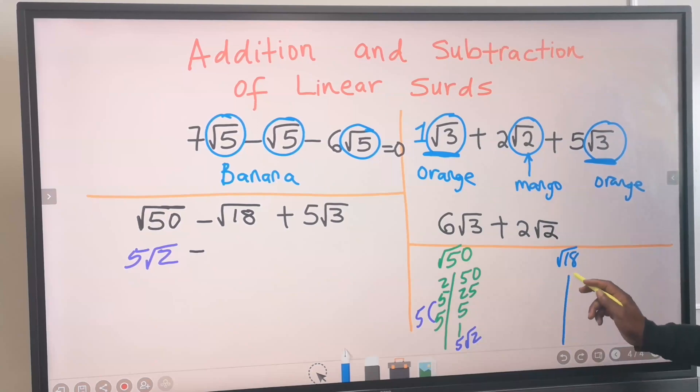I will draw a line. This is 18. I will start with 2. 2 will go into 18, 9. 2 cannot go into 9 without a remainder. I will try 3. 3 will go into 9, 3. 3 can still go. 3 will divide 3, 1. Once I get 1, I stop. Next, we are going to pair. This 3 has a pair. It is paired. However, 2 got no pair. 3 is paired. But 2 is not paired. The square root of 18 is 3 root 2.